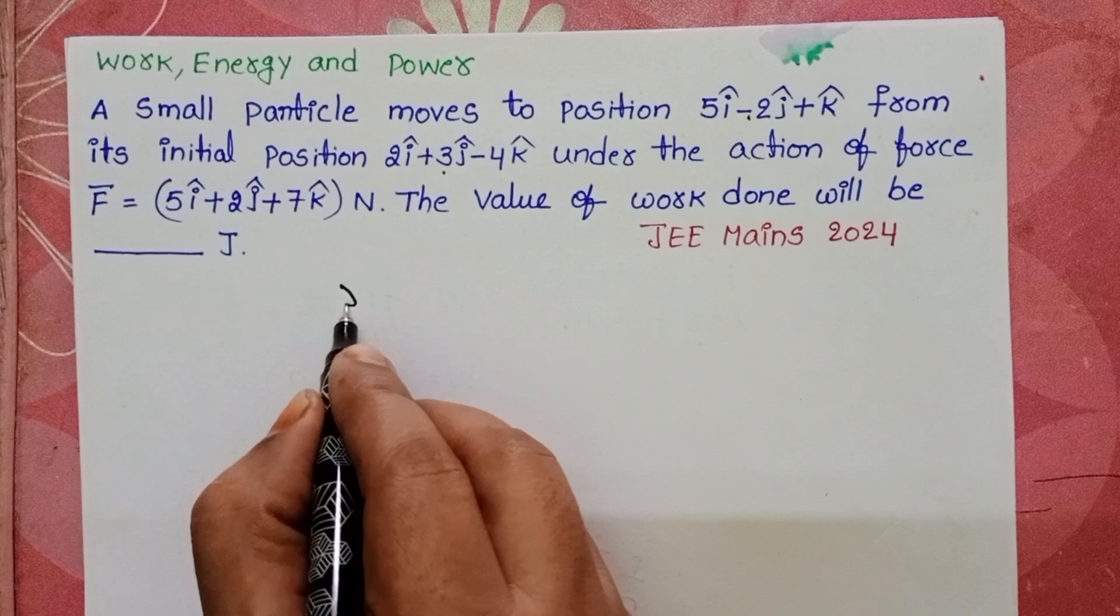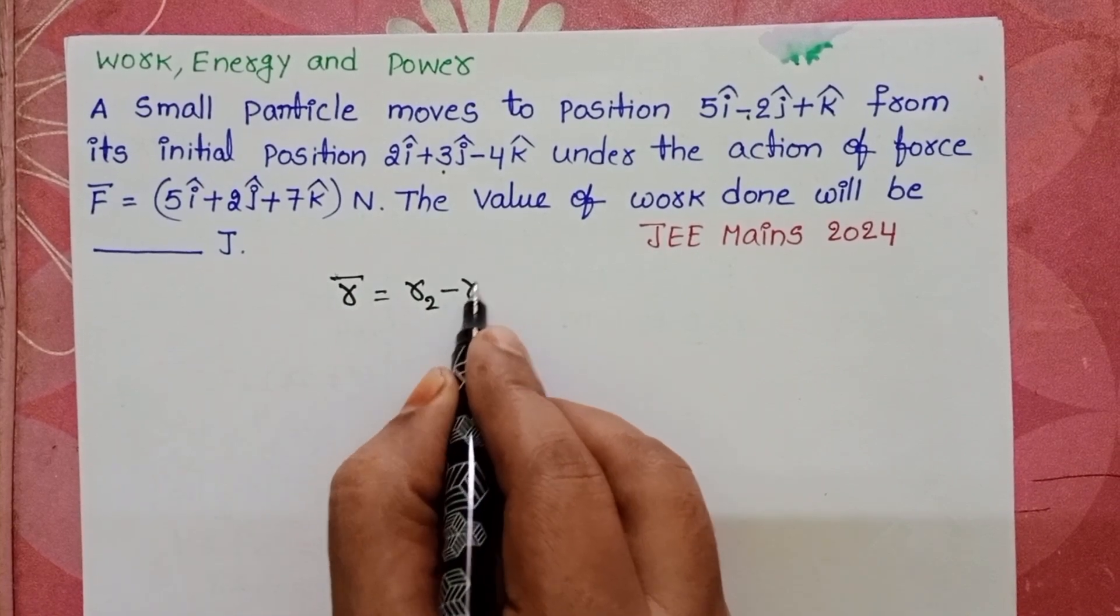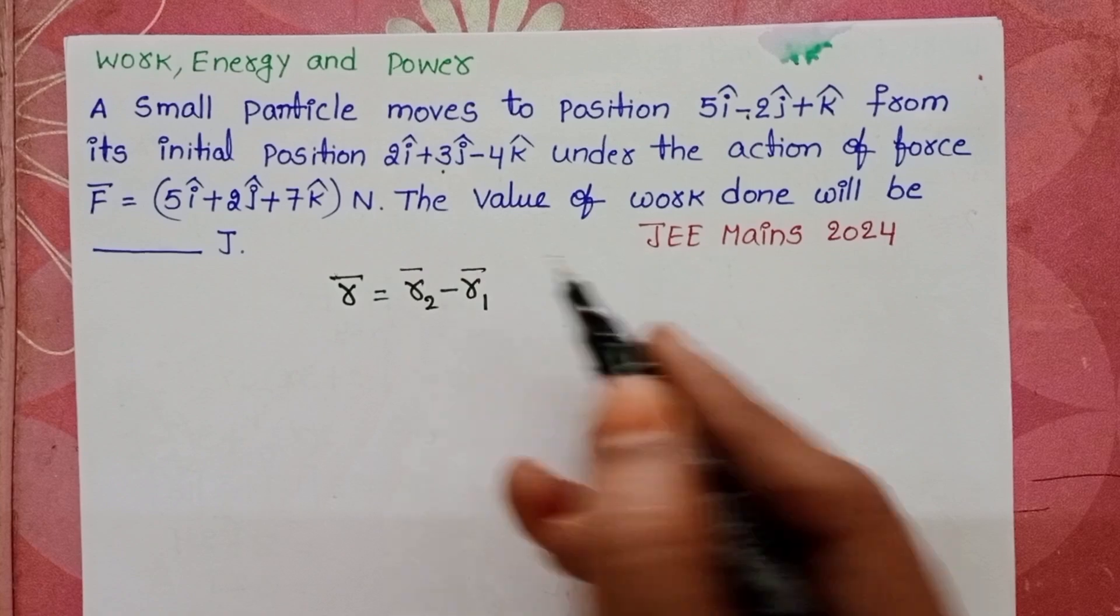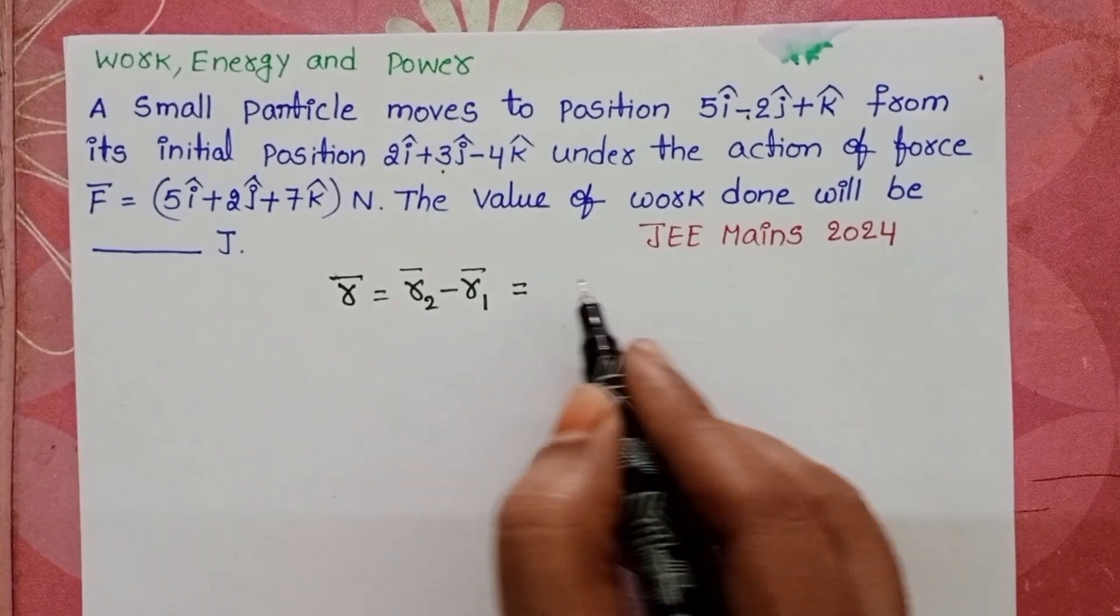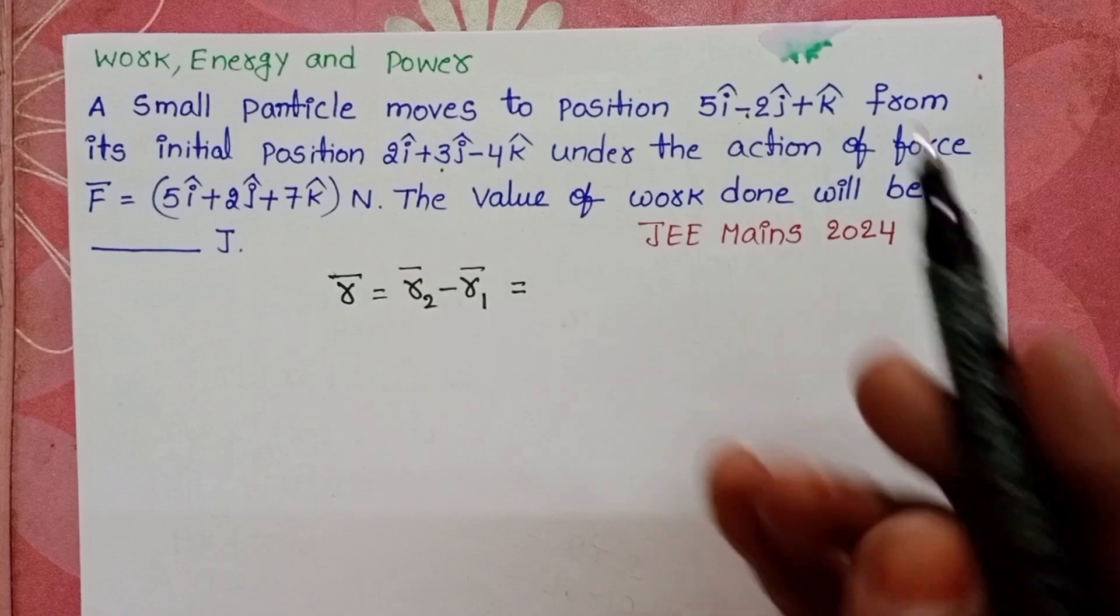First to find out the position vector, r bar equals r2 minus r1. Position vector is nothing but the displacement vector only. This is the final position and this one is the initial position.